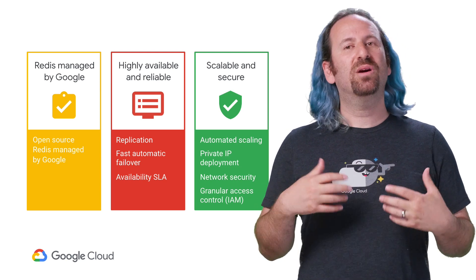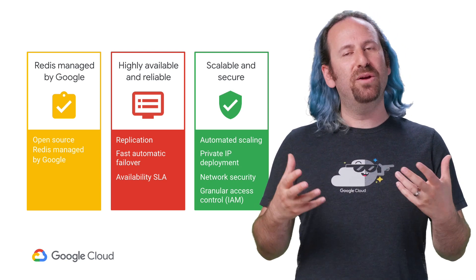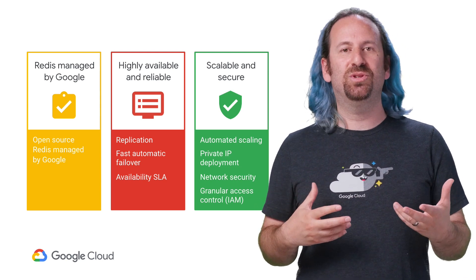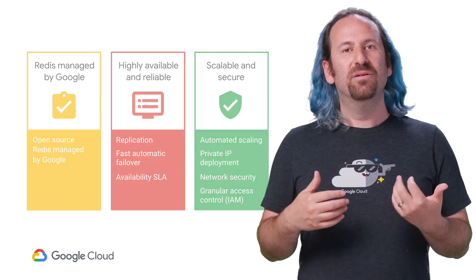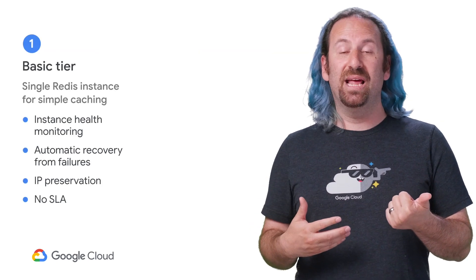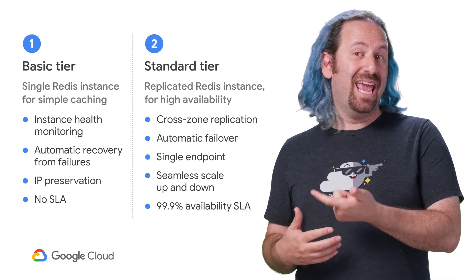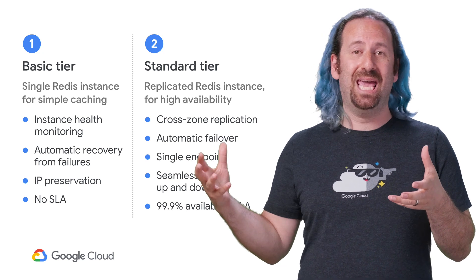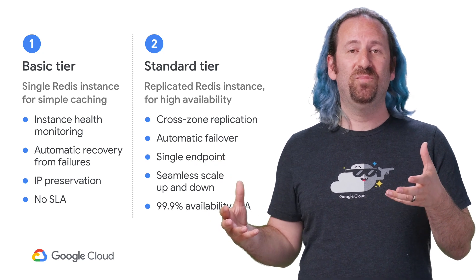Cloud Memorystore comes in two different packages to suit your needs. First, the basic tier — it's a standalone regional instance of Redis. And then the standard tier is a cross-zone replicated instance.